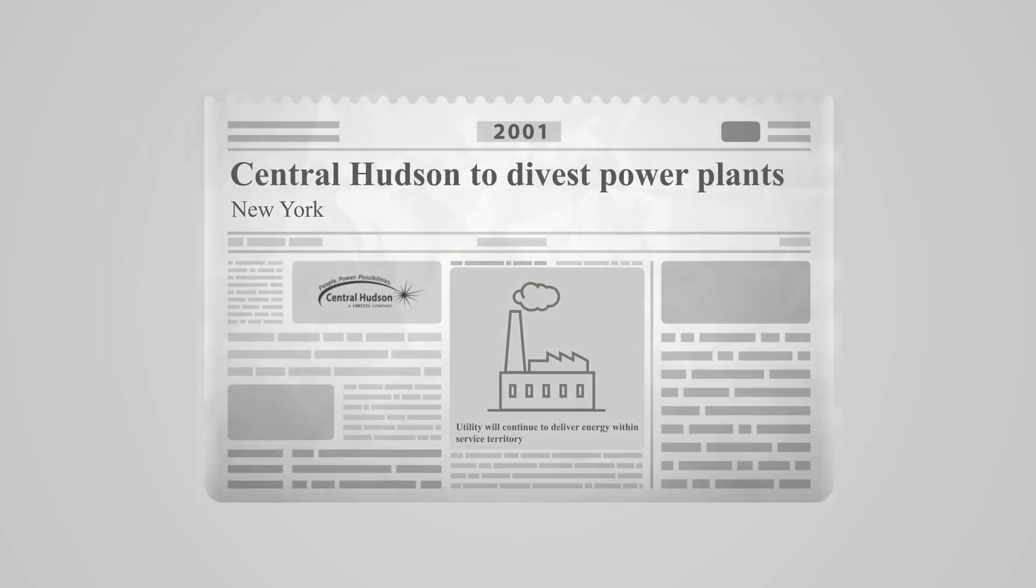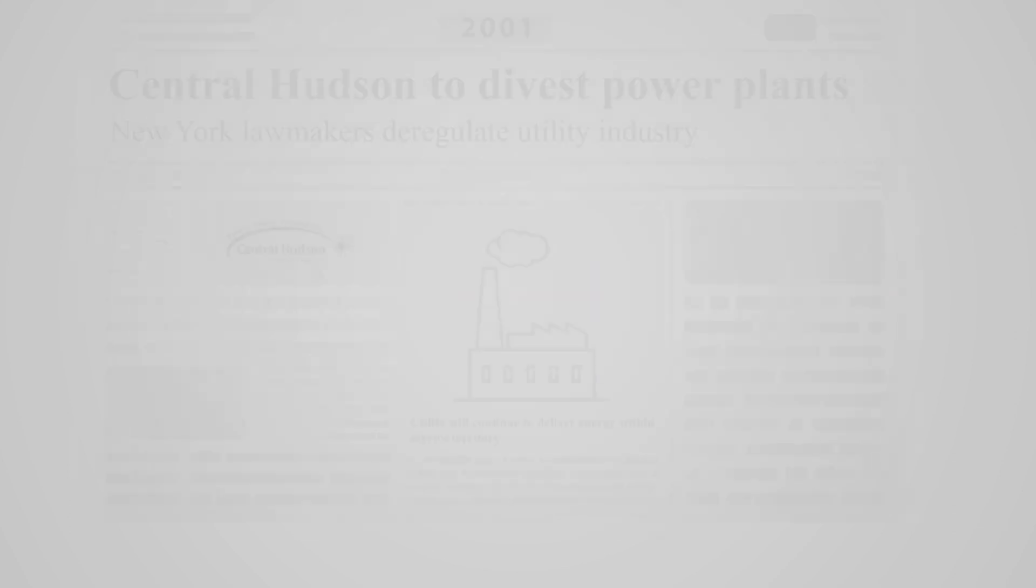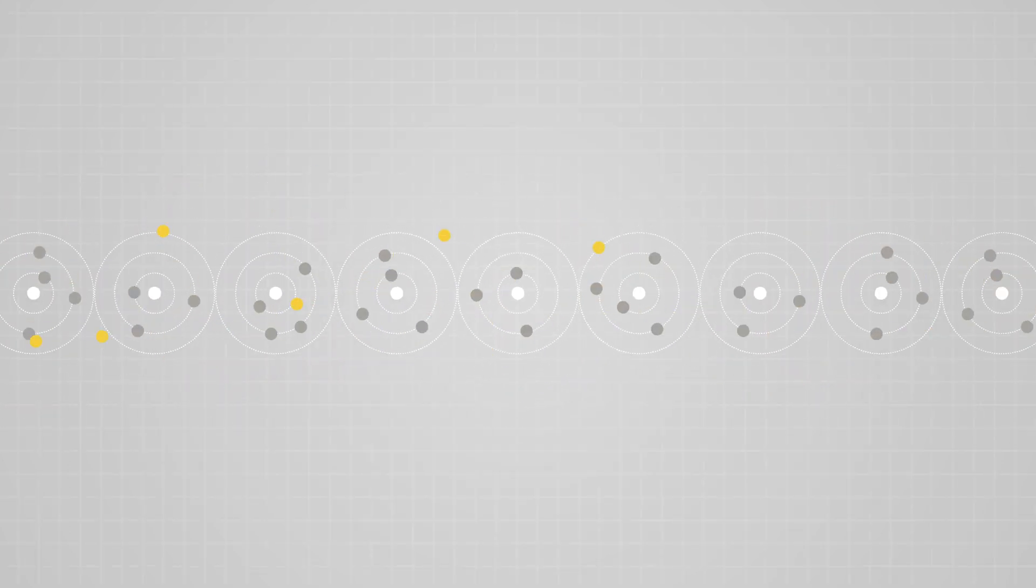As of 2001, Central Hudson has not owned or operated any large-scale electricity-generating facilities. But to understand the system as a whole, it's useful to have a basic knowledge of where electricity—the flow of electrons—comes from.